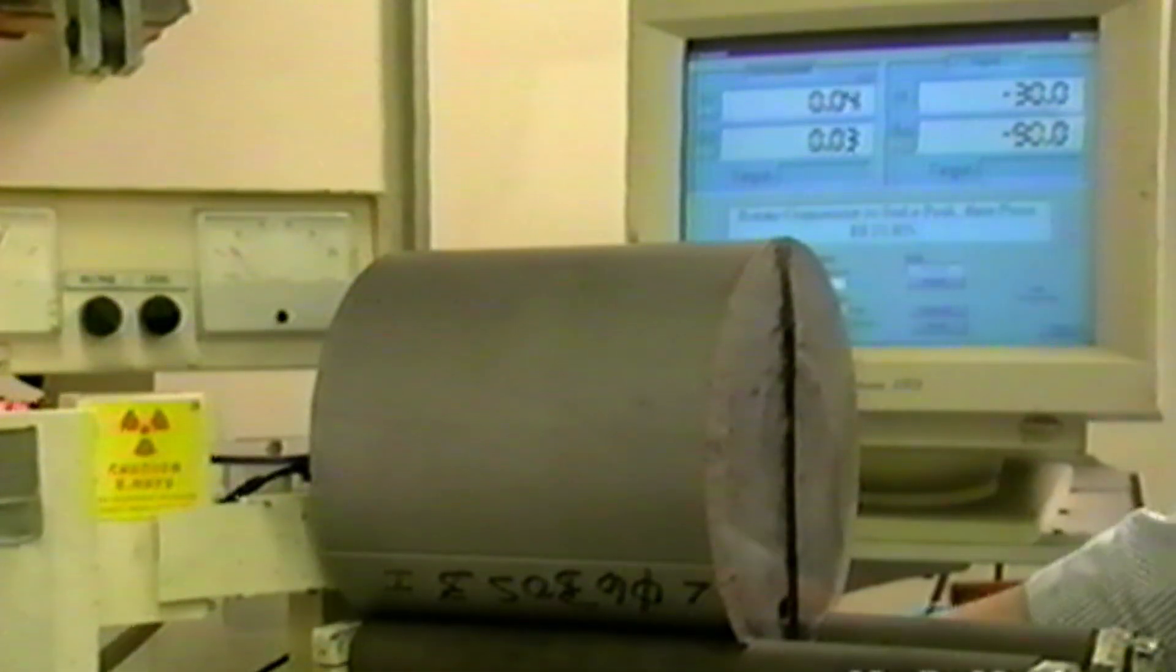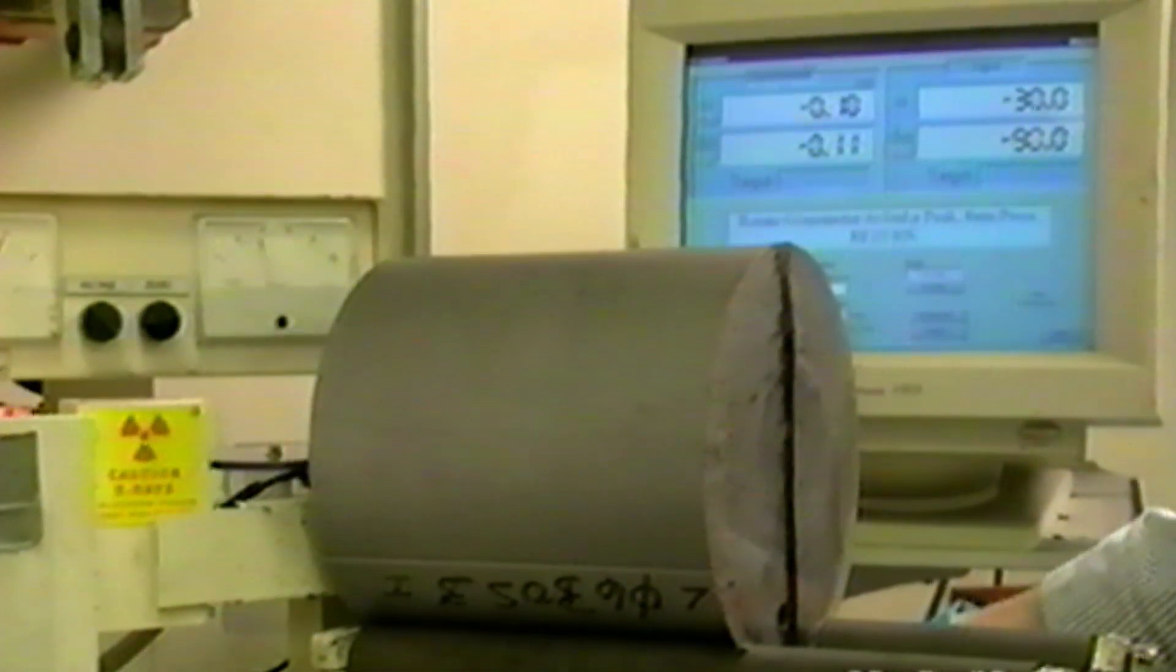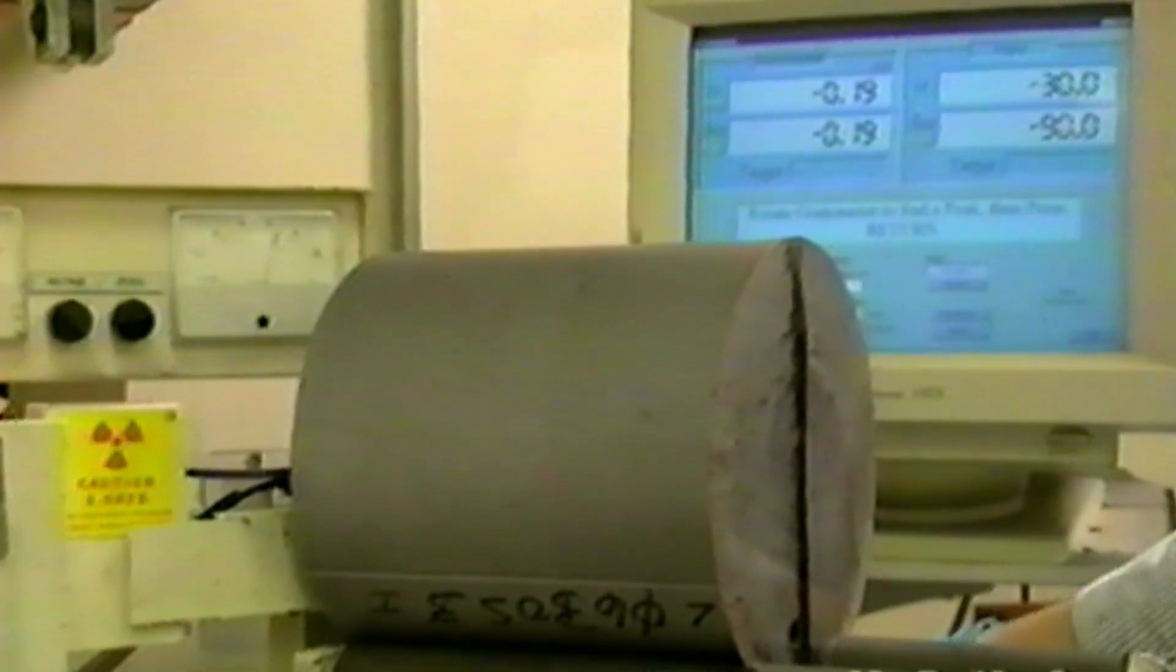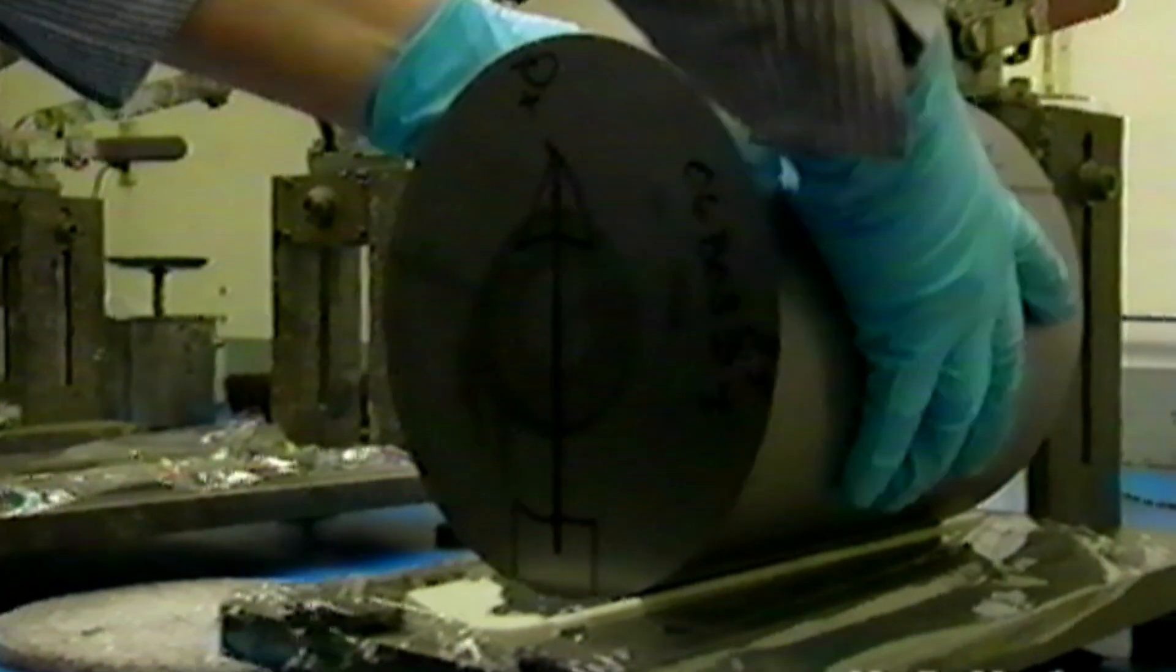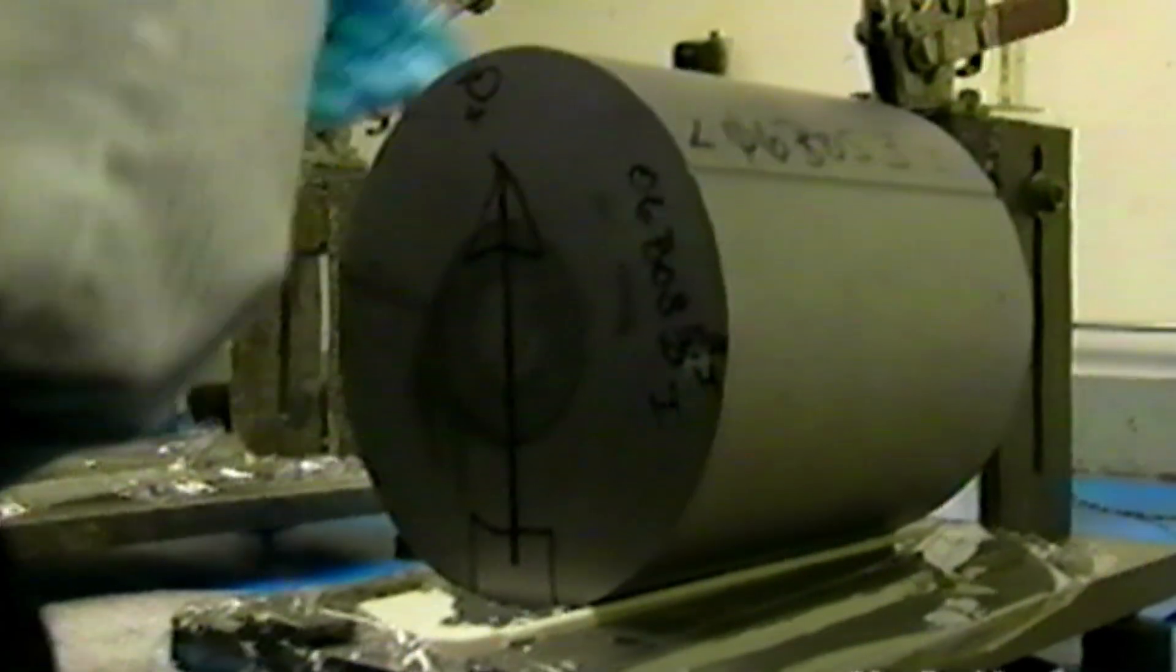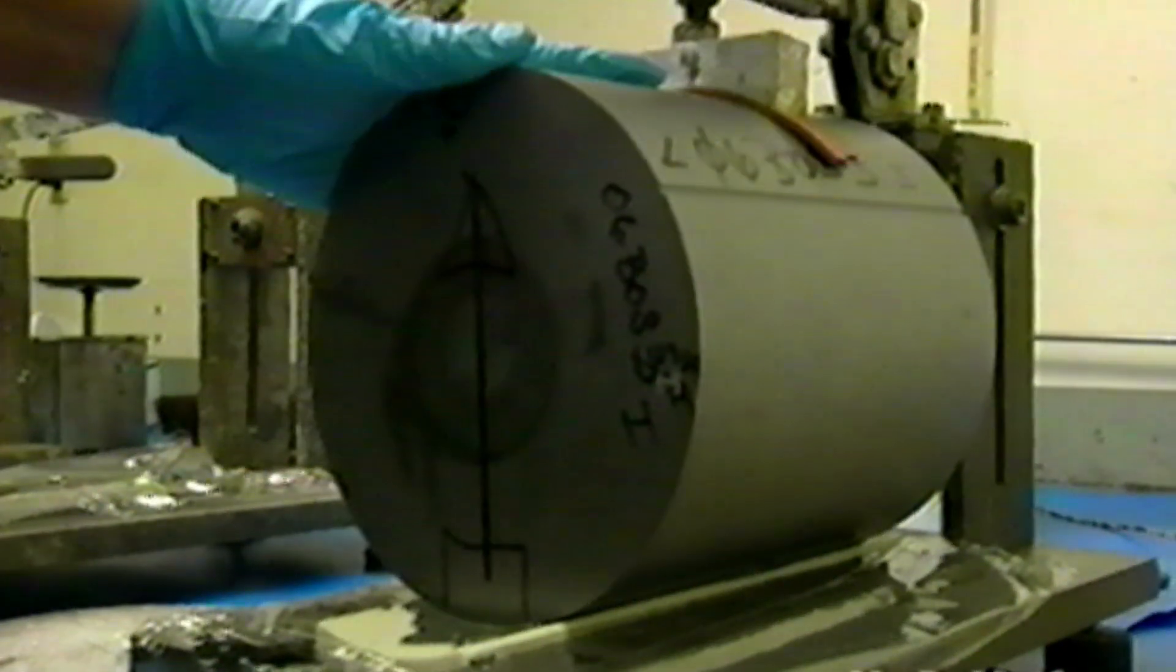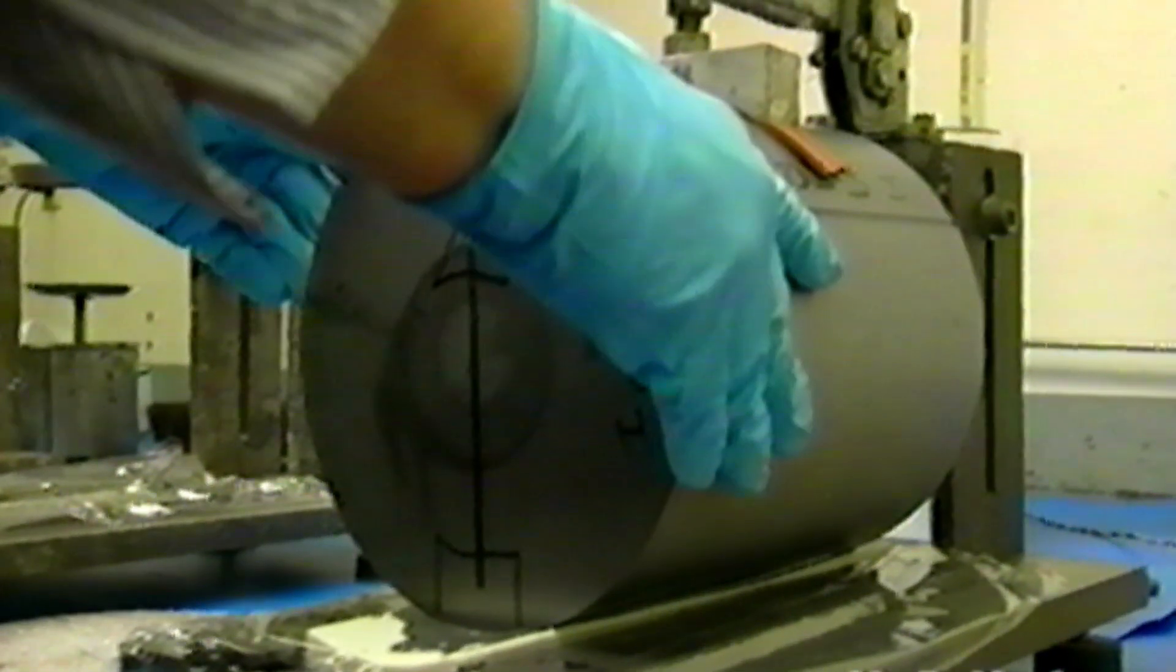Before the ingot proceeds to the wire saws for slicing, it is important to determine the precise crystal orientation using X-ray equipment. When orientation is confirmed, ground ingot sections are mounted with an adhesive on an epoxy resin beam. The adhesive is cured before the sections continue on to the wire saws.